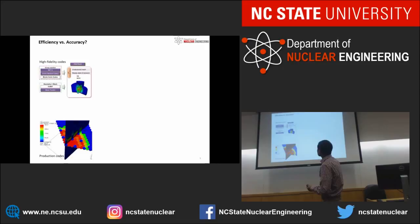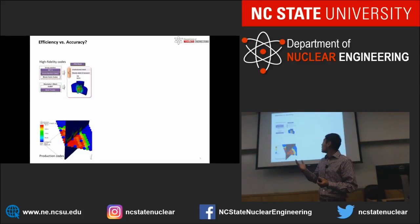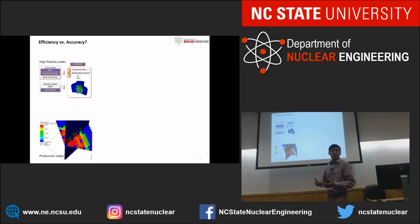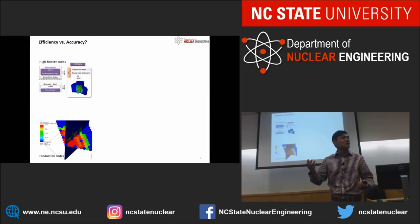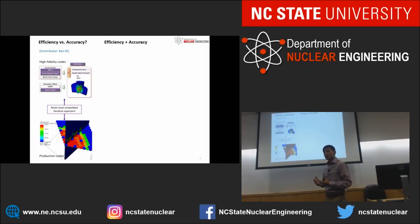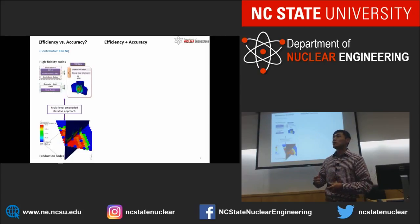We have these beautiful tools, but very often the question we're trying to answer is: what is the efficiency and what is the accuracy? On one hand, you have high-fidelity codes which have fewer approximations to the transport equation and give accurate results, but they run slower. Production codes, used on a daily basis, run really fast but lack that accuracy compared to high fidelity. We need to balance these two sets of codes. In a project led by Dr. Avamova, we're developing a multi-level embedded iterative approach to couple these two sets, involving cross-section generation and discontinuity factor generation, accelerating the calculation without losing accuracy.